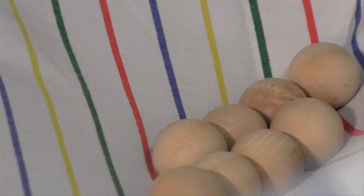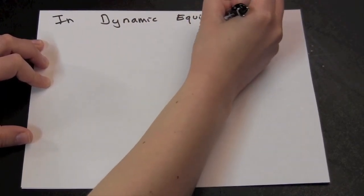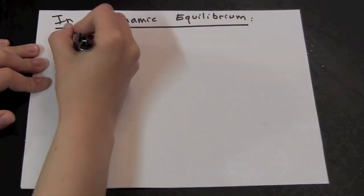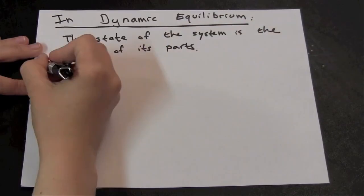But sometimes, even when opposing forces balance each other, small parts of the system still move. In dynamic equilibrium, the state of the system is the average of its parts. The average state can stay the same, even if small parts change.